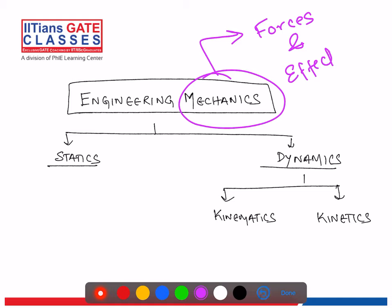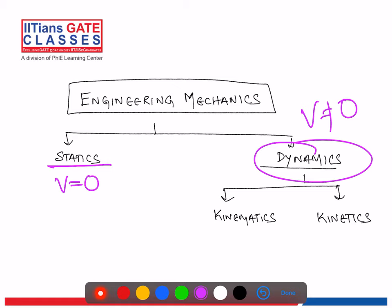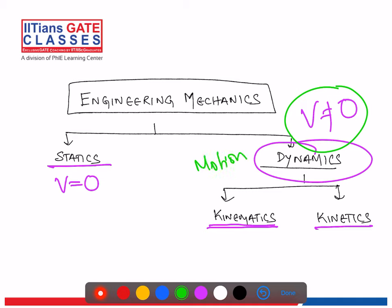Mechanics can be divided into two parts: statics and dynamics. In statics, the body or system under study is not moving — velocity is equal to zero. If the body starts moving, we move on to dynamics, where velocity is not equal to zero. Dynamics can be further classified into kinematics and kinetics. In kinematics, we study the motion but we don't consider the reason behind the motion — we don't consider force.